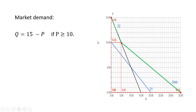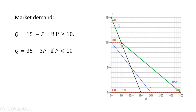If the price is greater than 10, consumer one will not be in the market — consumer one's demand stops at $10. So if the price is $11, only consumer two is buying the product, and consumer two would buy four units. This green line is the market demand when the price is greater than or equal to 10. If the price is less than 10, both consumers are in the market, and we add up both demand curves horizontally. That gives us 35 minus 3p, which explains this part of the demand when price is less than $10.